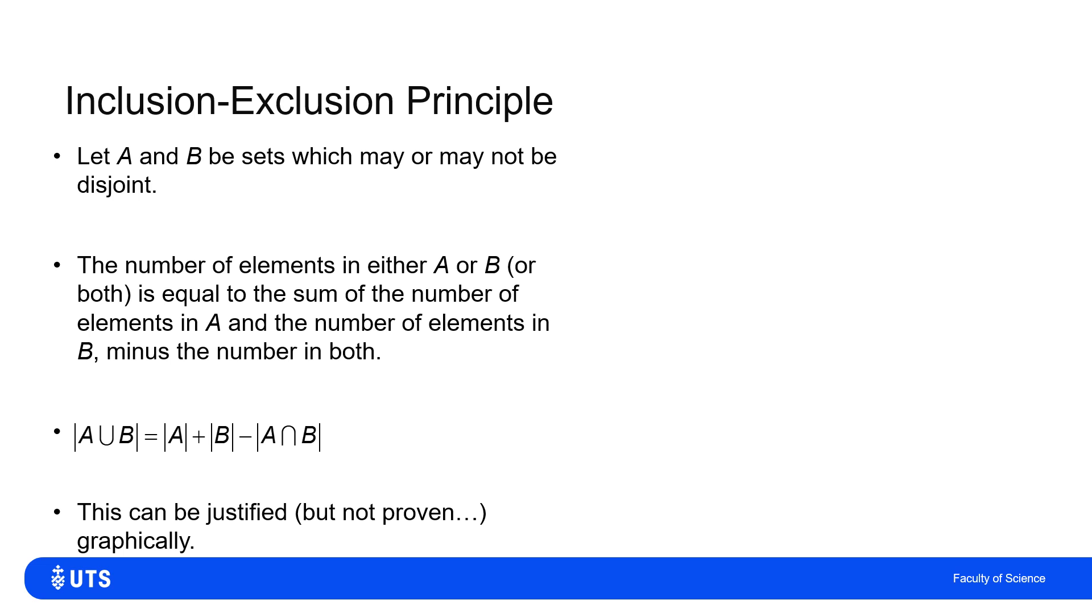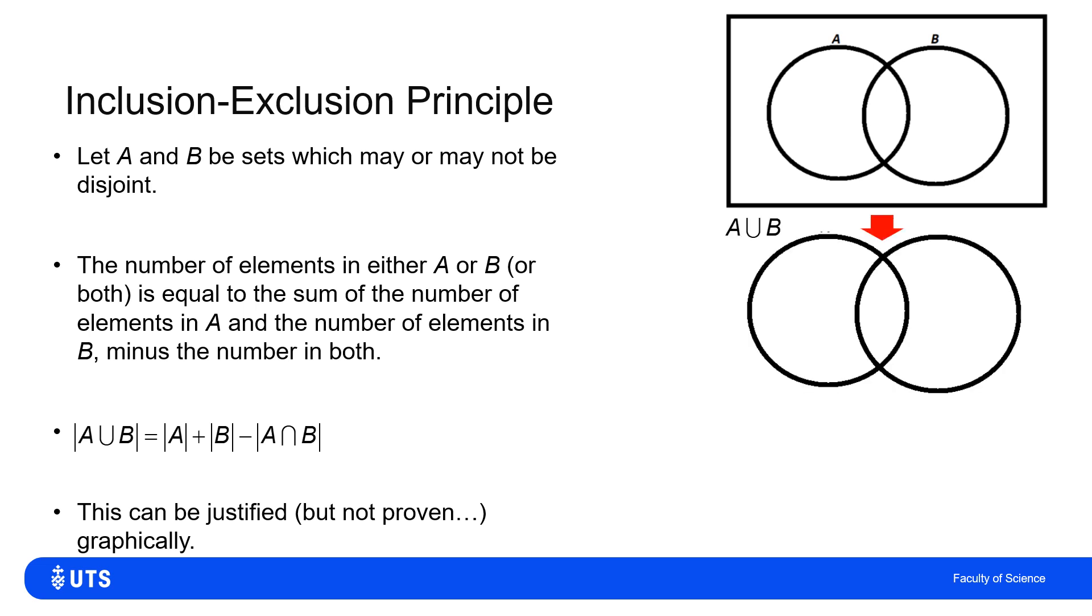So this is not really a proof, but we can see this visually. If I start with a Venn diagram with two sets A and B, which potentially contain some elements in the overlap, and if I just take what part corresponds to A or B, it's the two circles and their overlap, but not the bit outside.